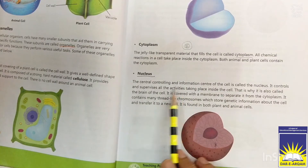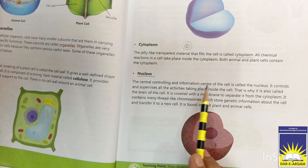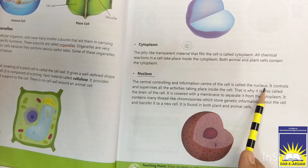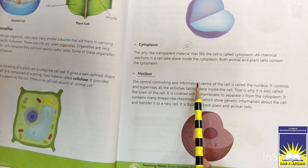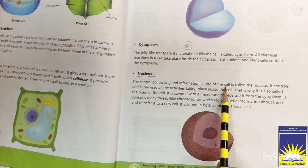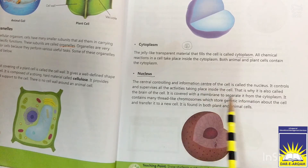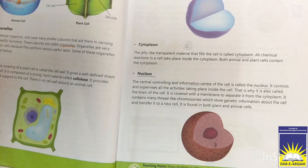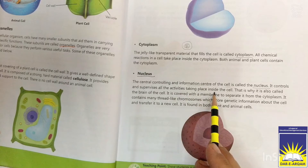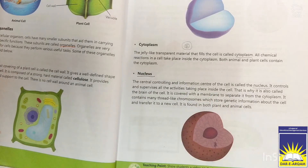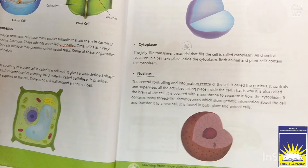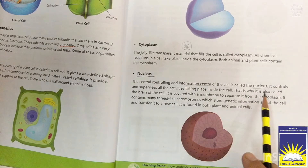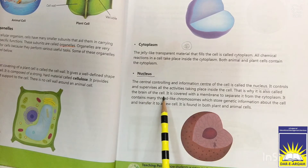Next is the nucleus. The nucleus is the central controlling and information center of the cell. It controls and supervises all activities taking place inside the cell. That is why it is also called the brain of the cell.